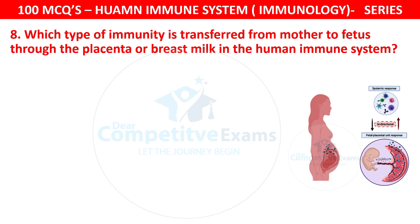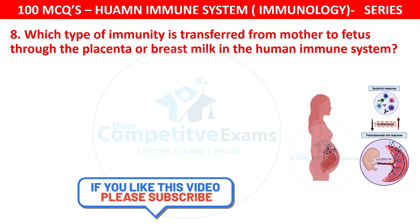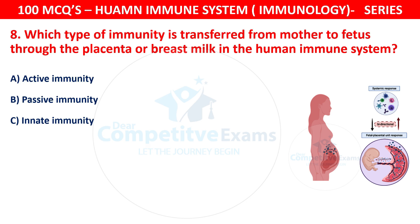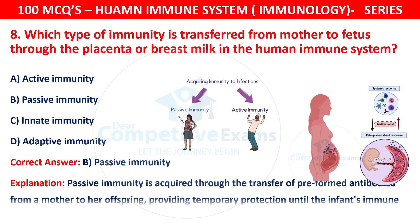Question 8. Which type of immunity is transferred from mother to fetus through the placenta or breast milk in the human immune system? The options are active immunity, passive immunity, innate immunity, or adaptive immunity. The correct answer is B — passive immunity. Passive immunity is acquired through the transfer of preformed antibodies from a mother to her offspring, providing temporary protection until the infant's immune system develops its own immunity.